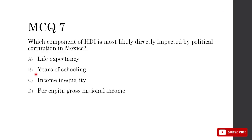Which component of HDI is most likely directly impacted by political corruption in Mexico? First, eliminate income inequality — that's not a component of HDI. Life expectancy: Mexico's healthcare system isn't dominated by the government, so political corruption won't impact it much. Years of schooling: people will still go to school regardless. That leaves D — per capita gross national income — as the component most directly impacted by political corruption in Mexico.